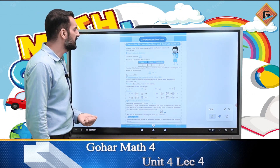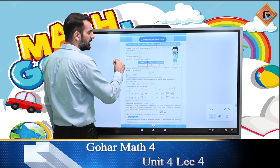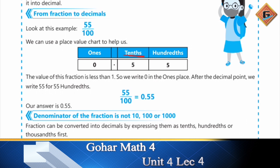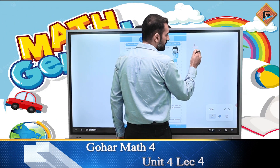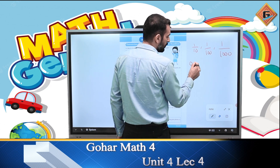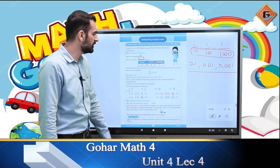तो चलते हैं हमारे topic की तरफ — conversion between fractions and decimal numbers। जैसे पहले बताया, हम fraction से decimal या decimal से fraction में convert कर सकते हैं। Decimal के बाद 10th place आती है, फिर 100th place। अगर denominator 10, 100, या 1000 हो — यानि 1/10, 1/100, या 1/1000 — तो हम simply इसको 0.1, 0.01, और 0.001 लिख सकते हैं।